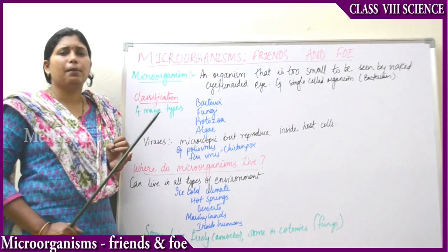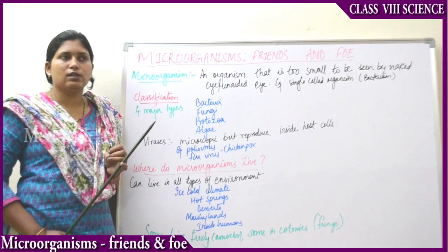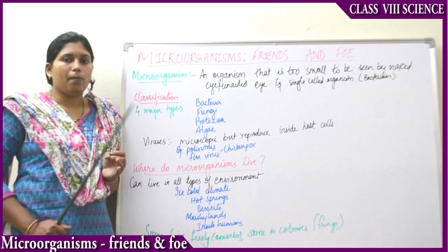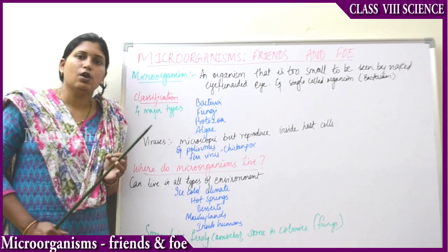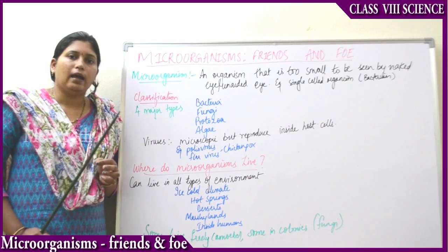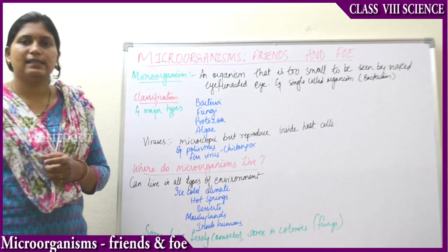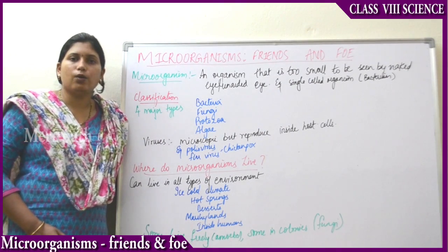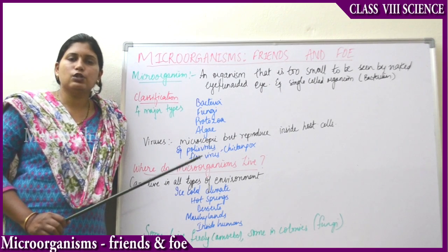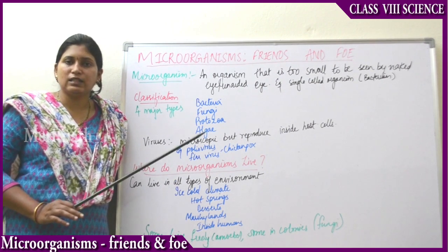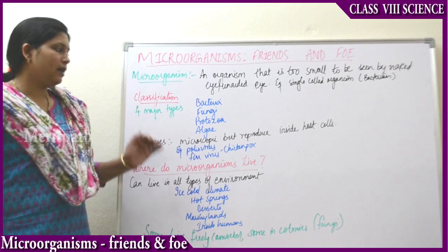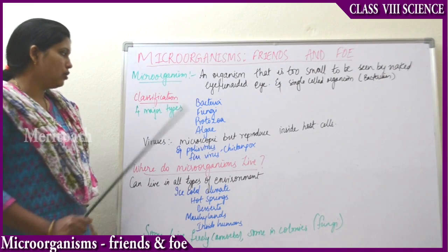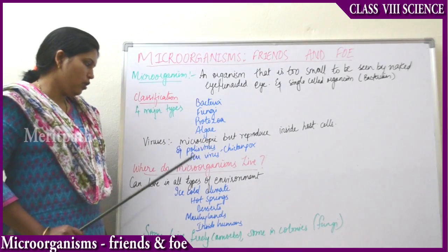There are many viruses around us. The major ones include polio, which is caused by the polio virus. Fever, common cold, and throat infections are all caused by viruses. Chickenpox, which is also a very common disease, is again caused by a type of virus. So there are many viral diseases, but viruses do not come under the major classification of microorganisms because they become living only when they enter host cells.